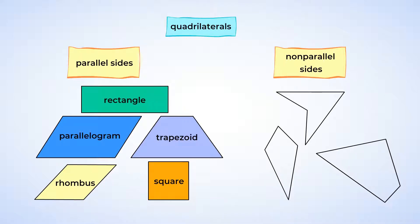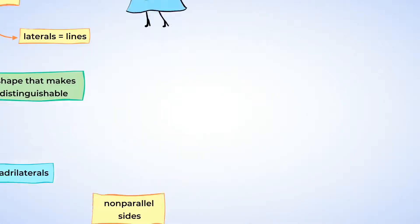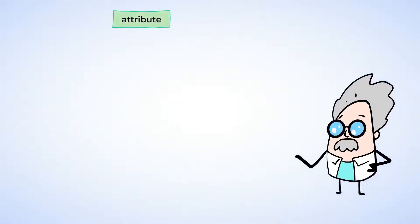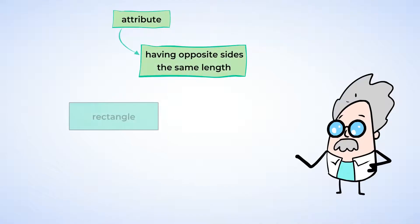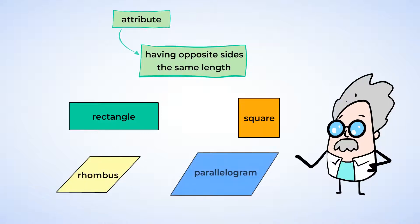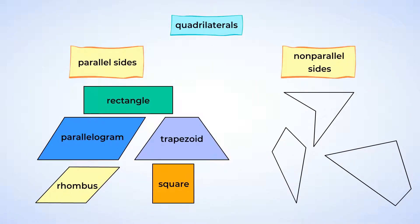We want to discover what makes a square so different from all the other quadrilaterals. Another attribute shapes have is opposite sides with the same length. Such shapes are rectangles and squares, and also rhombuses and parallelograms. Let's organize our shapes to get all those that have opposite sides equal in length together.